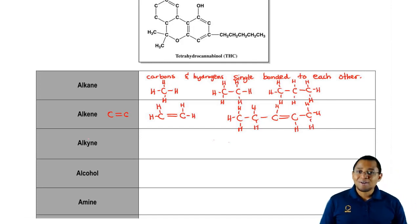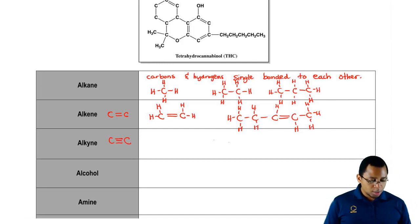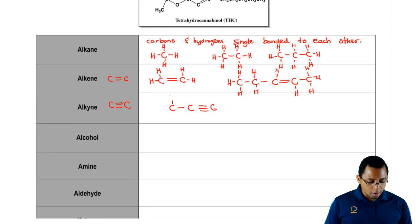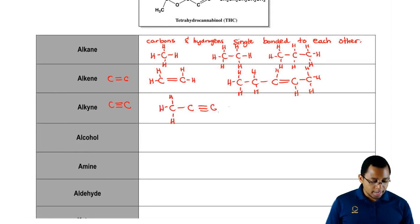An alkyne — the distinguishing characteristic is that we have two carbons triple bonded to each other. Same basic principle: as long as you have a triple bond somewhere between two carbons, it's an alkyne.